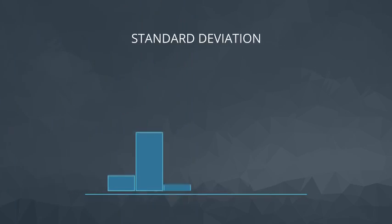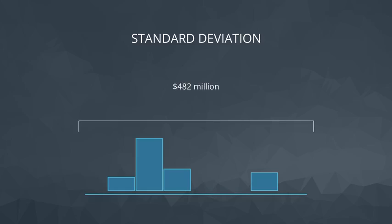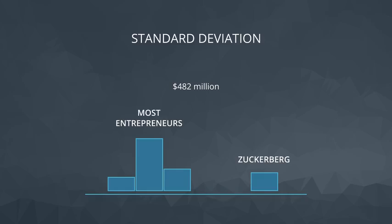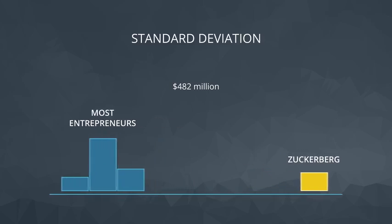Our standard deviation is also not a great measure in this case. At approximately 482 million dollars, all this suggests is that our earnings for entrepreneurs are really spread out. But that really isn't fair either — just one point is really, really far from the rest.